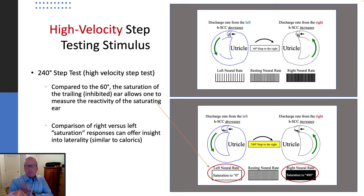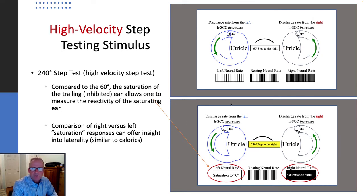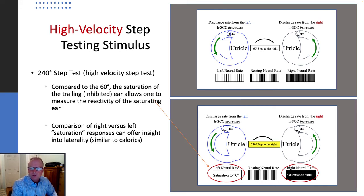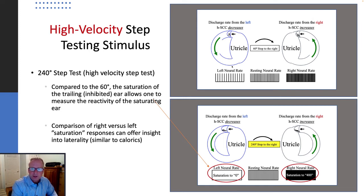Let's compare this to high velocity step testing. High velocity step testing is a very different stimulus. As we rotate to the right over that 0.3-second period, you get an excitation in the leading ear and an inhibition in the trailing ear, but you still have a neural response that is inhibited in that trailing ear.